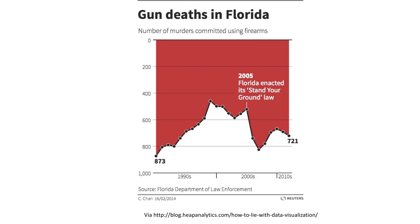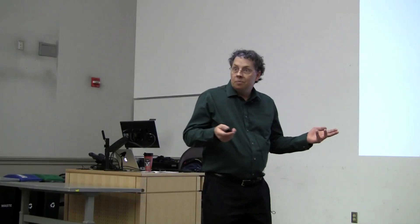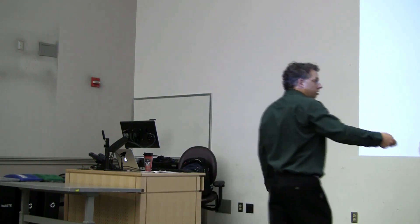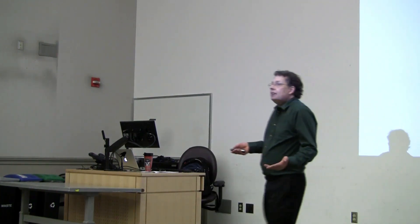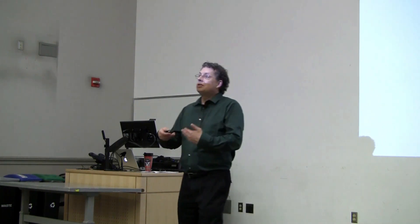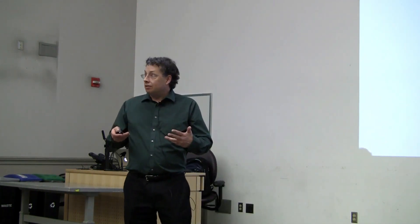The axes are inverted. Here we've got the number of murders at zero at the top, and the number of murders is decreasing in this direction as we go down. We're used to seeing the axis going the other way — we're used to thinking that corresponds to a decline. What this actually shows is a massive increase in the number of murders that occur after the Stand Your Ground Act is enacted. Got to be on the lookout for these things. There's a lot of misleading information — this is from Reuters. This one may have actually even been an accident, but it certainly tells a particular story if you don't take the time to look at it closely.